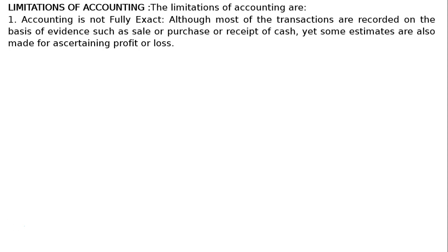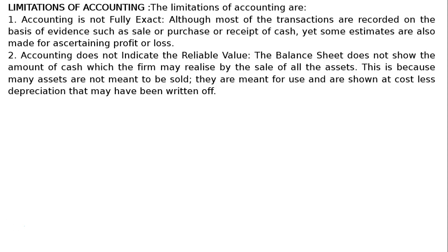The second limitation is accounting does not indicate the realizable value. The balance sheet does not show the amount of cash which the firm may realize by sale of all the assets. This is because many assets are not meant to be sold — they are meant for use and are shown at cost less depreciation that may have been written off.